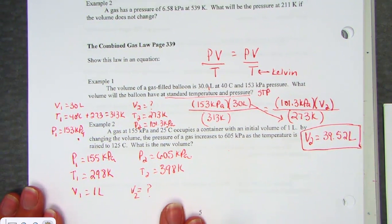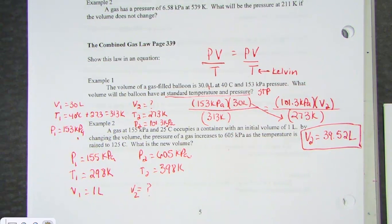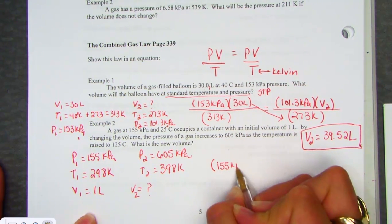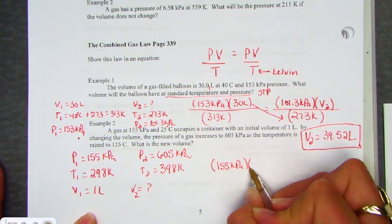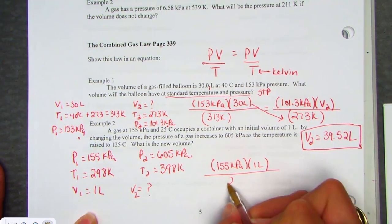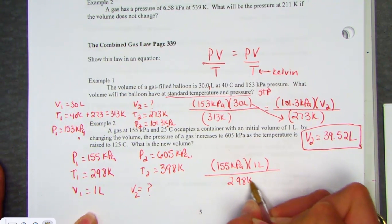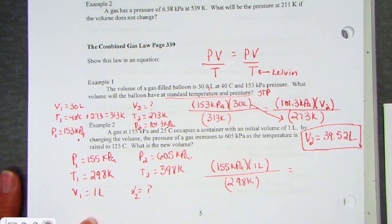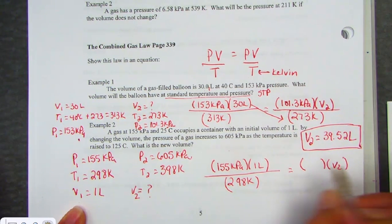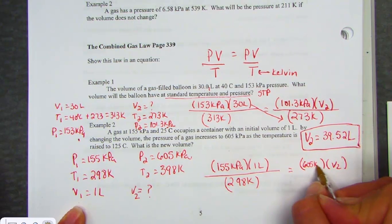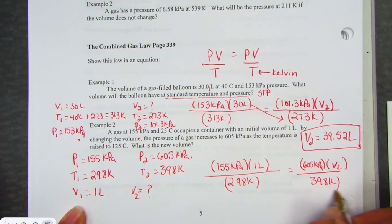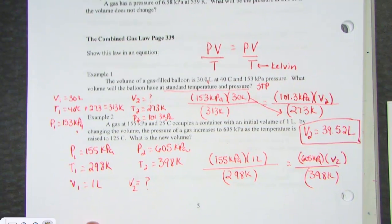And again, this part of it, I don't have to see that. It's just helpful to see where I'm putting numbers in. Our first pressure, we have 155 kPa. Its volume was given as 1 liter. Set over our temperature of 298 Kelvin units. We'd like to know the new volume. Pressure has gone to 605 kPa. And the new temperature of 398 Kelvin.